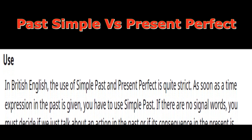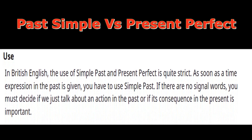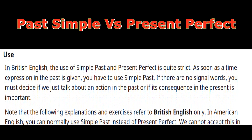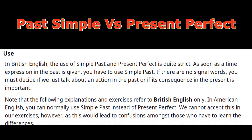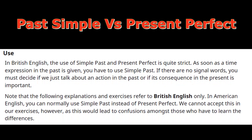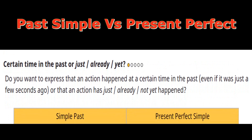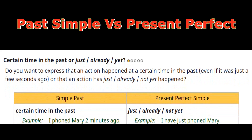In British English, use of simple past and present perfect is quite strict: as soon as a time expression in the past is given, you must use simple past. Without signal words, you decide — is it just an action in the past, or does it have a result or consequence in the present? Note that in American English, you can normally use simple past instead of present perfect.